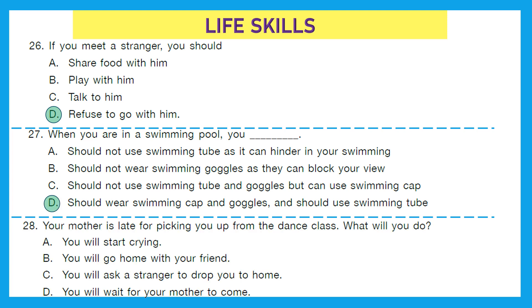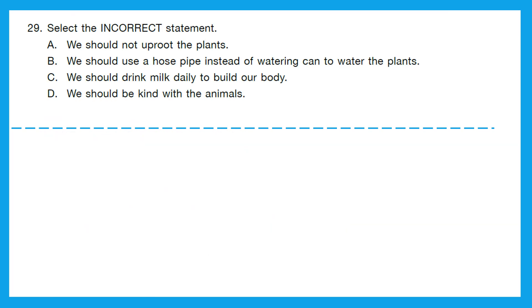Question 28: Your mother is late for picking you up from the dance class. What will you do? Start crying? No. Go home with a friend? No. Ask a stranger to drop you home? Not at all. Wait for your mother to come? That is the right answer — option D. Question 29: Select the incorrect statement. We should use a hose pipe instead of a watering can to water the plants — this is incorrect because we use a watering can. So option B is our correct answer.